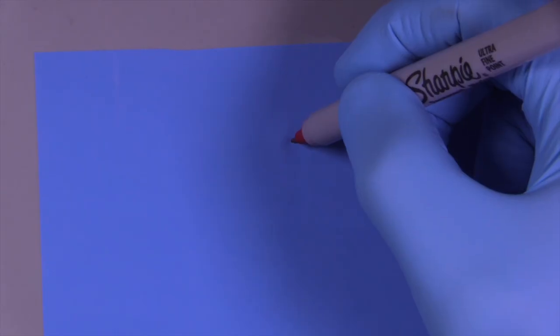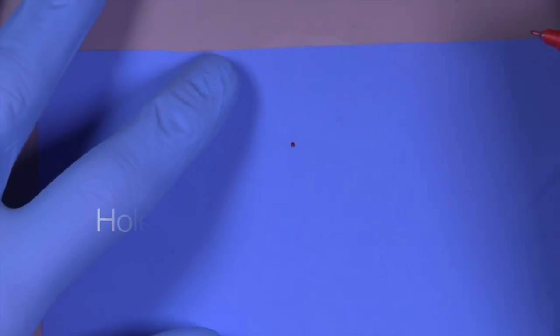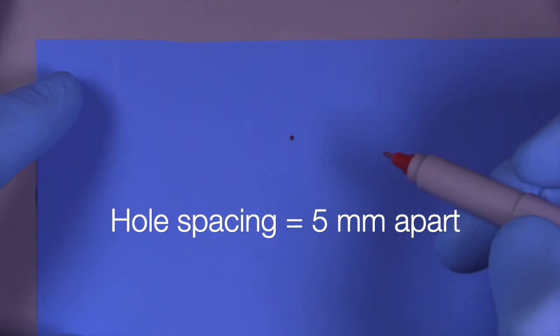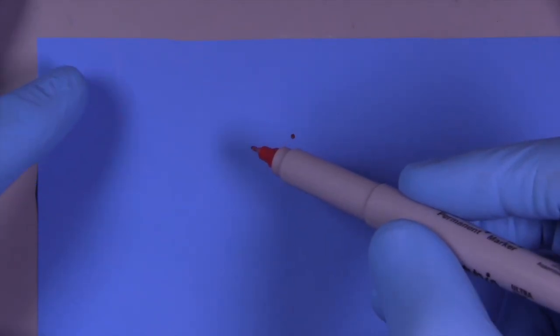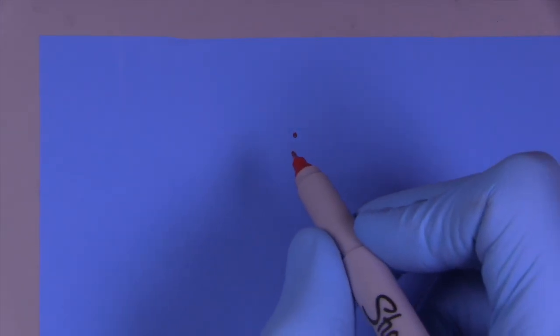from tooth number two to tooth number eight. We'll go ahead and mark the holes about five millimeters apart from each other—that's adequate spacing because you want enough rubber dam between the teeth so it doesn't leave an open area or too much rubber dam so that it bunches up on itself. I usually estimate this, but you could also use a way of measuring that is